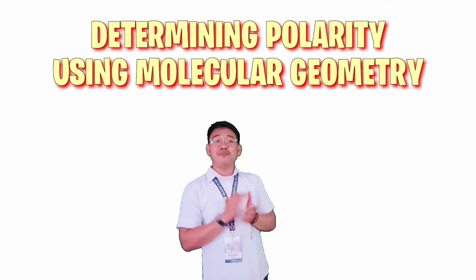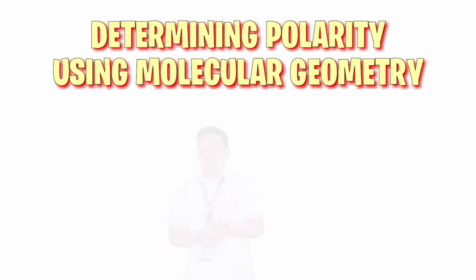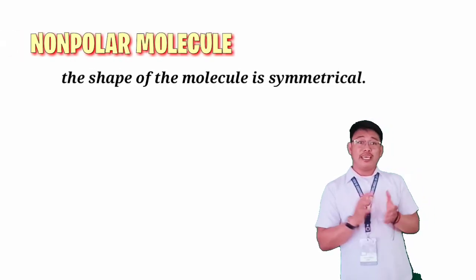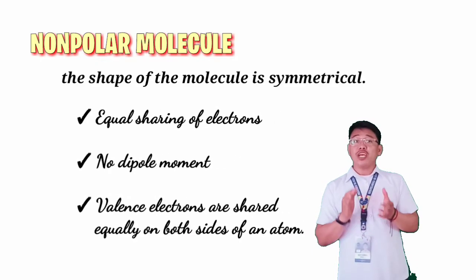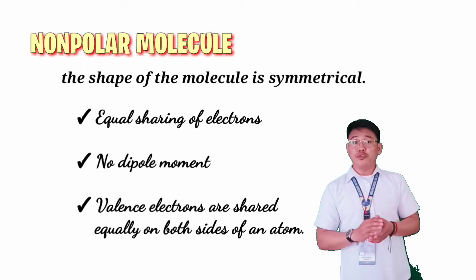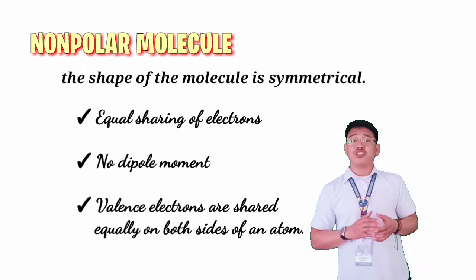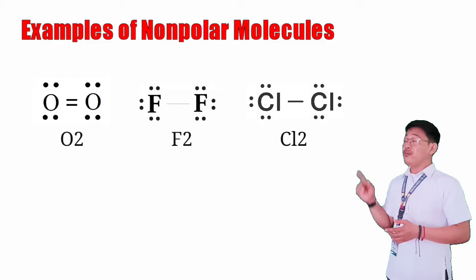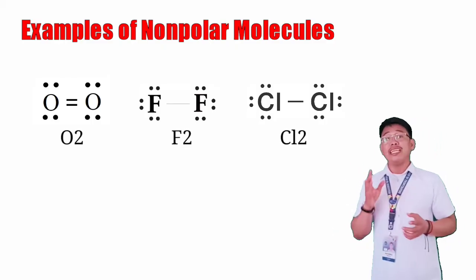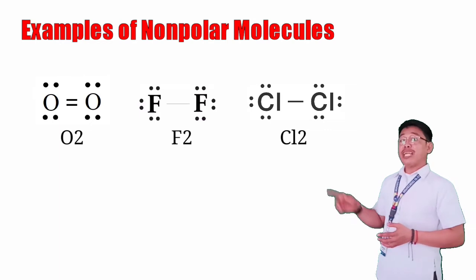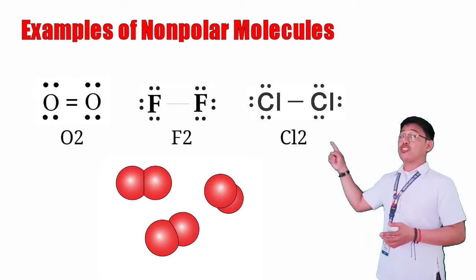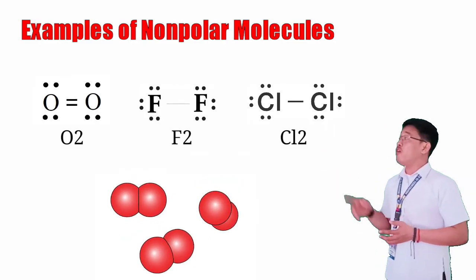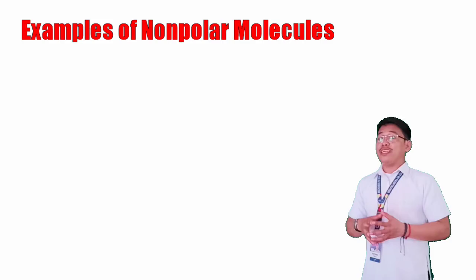Whew! That's so much for a basic concept, I know. Now, let's discuss how to determine polarity using the structure of the molecules. If you can recall in our previous video, a molecule is non-polar if the shape of the molecule is symmetrical. This is due to the equal sharing of electrons. Hence, no dipole moment is produced. Thus, the valence electrons are shared equally on both sides of an atom. For example, oxygen gas, fluorine gas, chlorine gas, and other diatomic molecules containing atoms of the same element. The central atom does not have lone pairs. As you can see, all its electrons were equally shared to another atom of the same element.